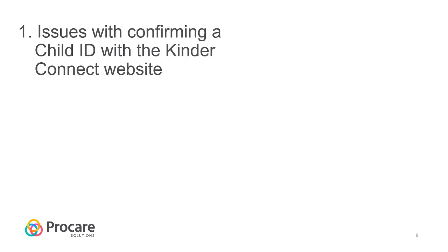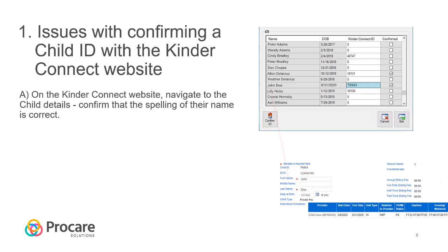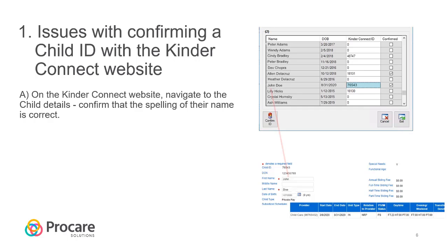When confirming a child's ID with the KinderConnect website, everything in ProCare must match the KinderConnect website if you want to submit times for reimbursement. Click Confirm Child ID and verify the information matches the KinderConnect Children's Detail page. Check that the spelling in ProCare matches exactly as it appears on the KinderConnect website, even if the name on the website is misspelled.